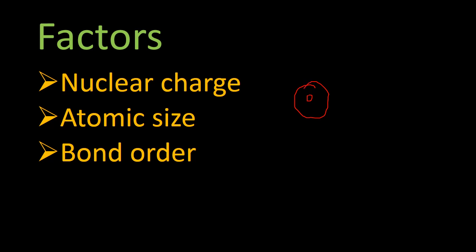Third, bond order: when two atoms join together by a covalent bond, carbon can join carbon by a single bond, double bond, or triple bond. With increasing bond order, the length of the bond decreases, and as the two atoms come closer to each other, the electronegativity value increases. These are the factors on which electronegativity depends.